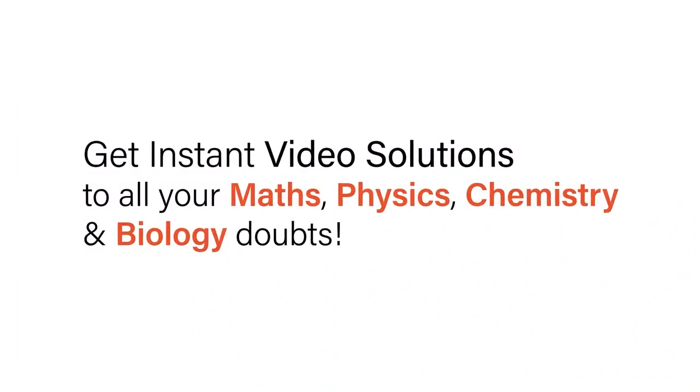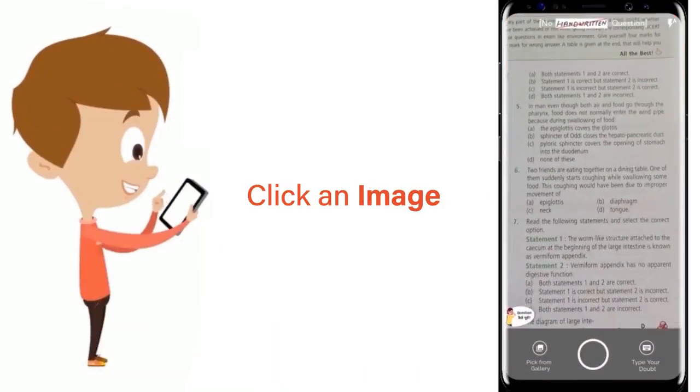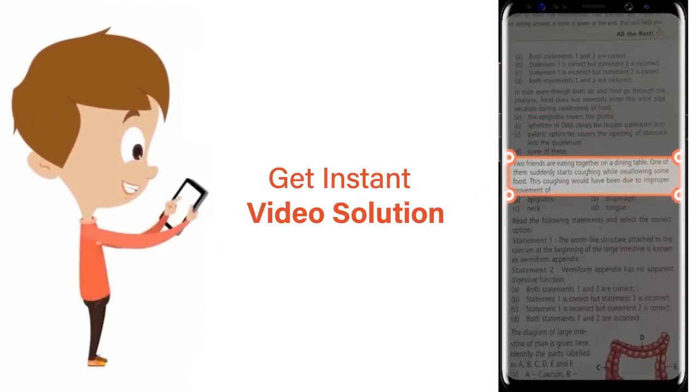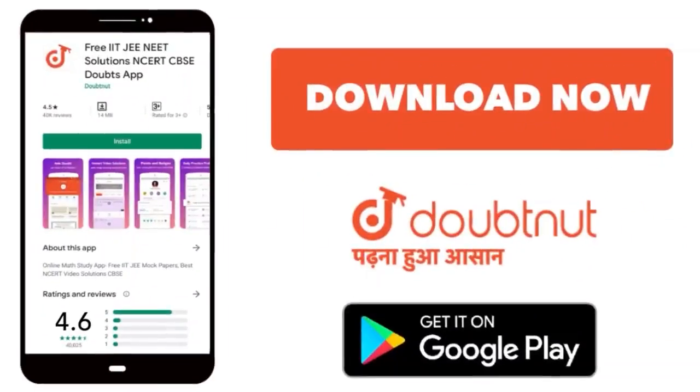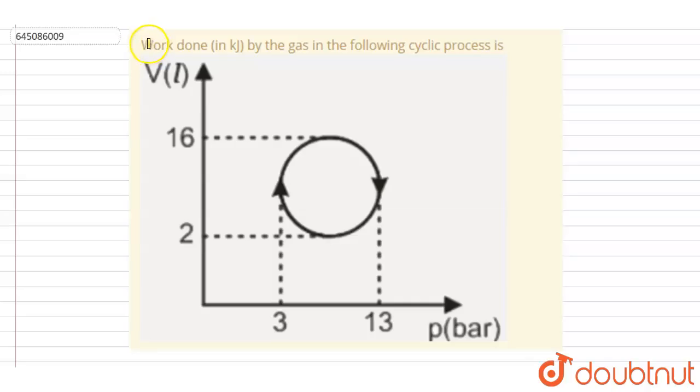With Doubtnet, get instant video solutions to all your math, physics, chemistry, and biology doubts. Just click the image of the question, crop it, and get an instant video solution. Download Doubtnet app today. Hello everyone, work done in kilojoule by gas in the following cyclic process.